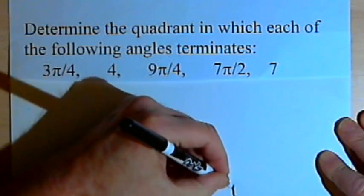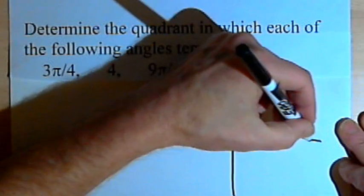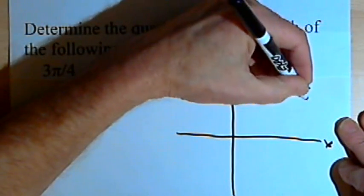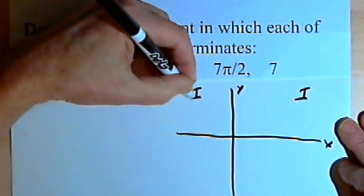So I'm going to draw a coordinate plane. I'll label an x-axis and a y-axis, and I'll mark the four quadrants.